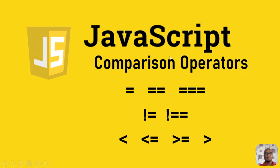In this series we're looking at comparison operators. The single equals sign is not a comparison operator — it's an assignment operator, which we covered in the last video. The double equals sign is for light comparison, checking whether one value equals another, like 2 == 2 or 4 == 5. The triple equals sign is for strong comparison.